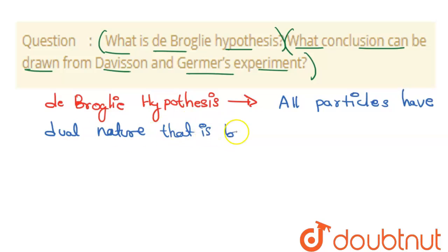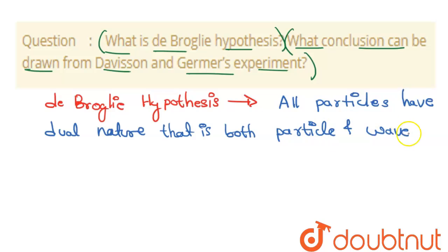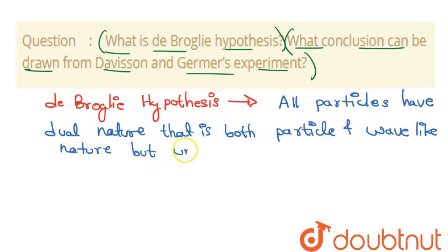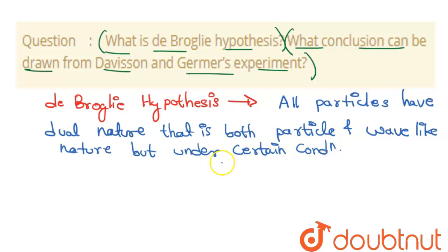Particles have both particle and wave-like nature, but under certain conditions. Now, the second part — what conclusion can be drawn from the Davisson and Germer experiment?